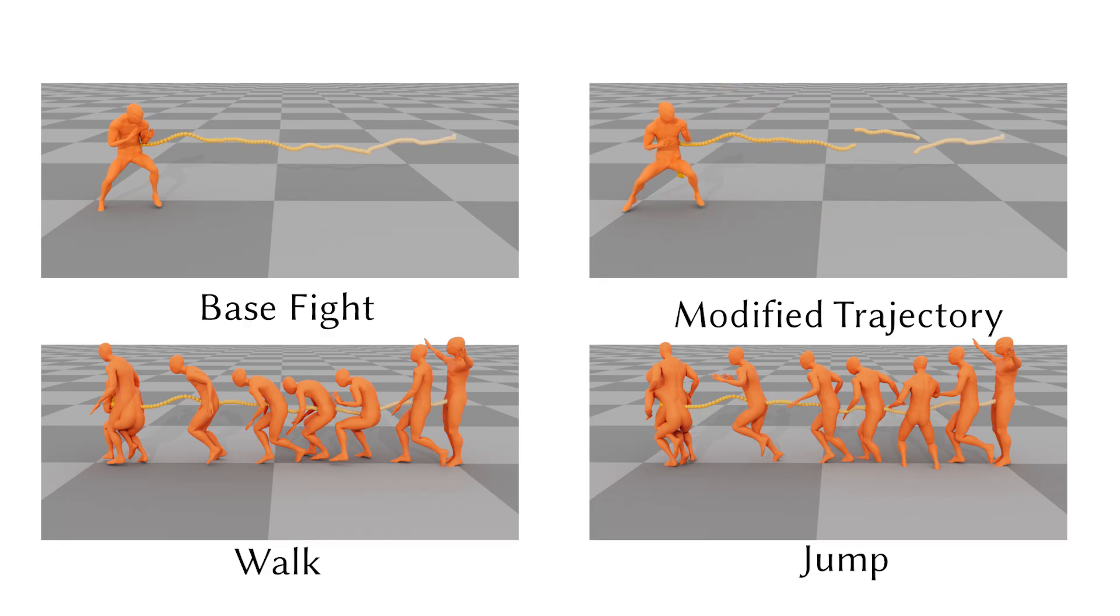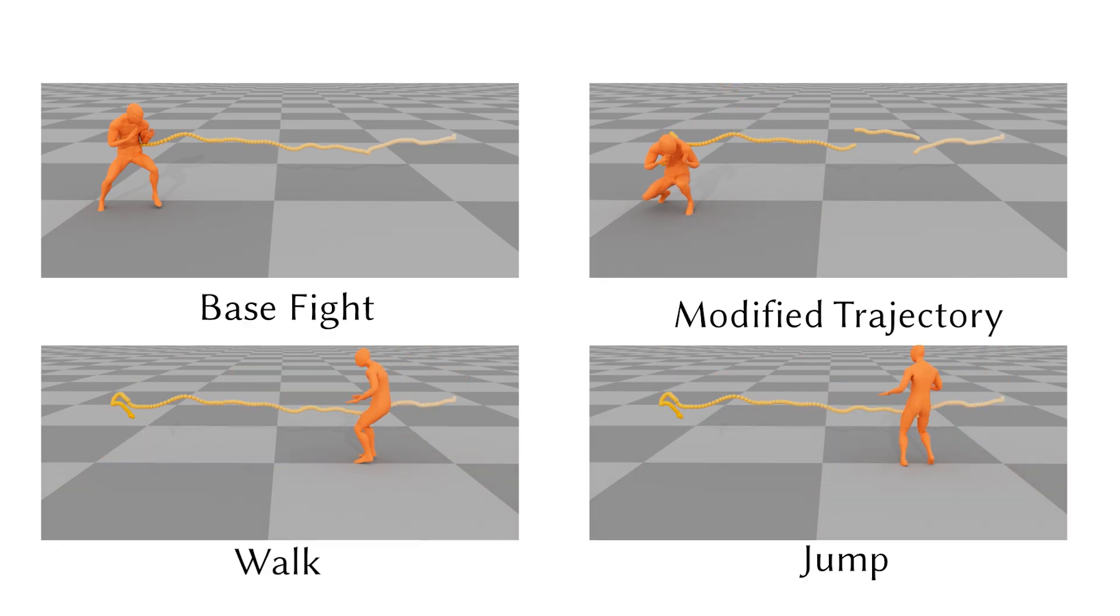Then we substitute the action label from fight to walk and jump. The generated results maintain both trajectory adherence and clear style differentiation corresponding to each action type.